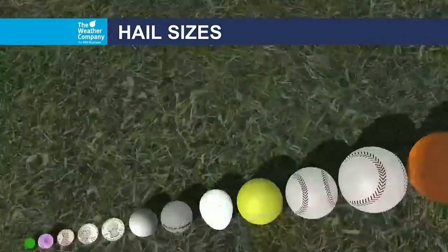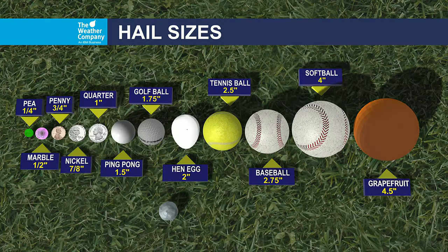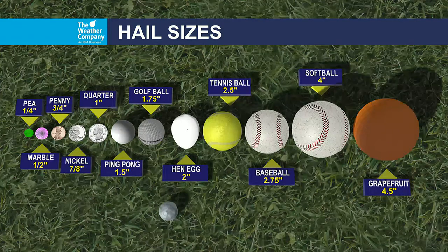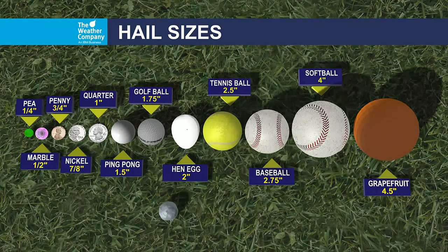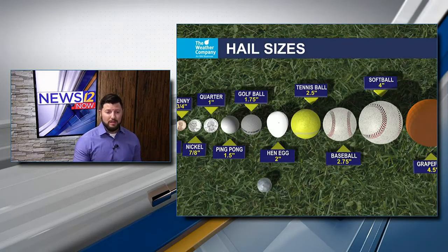As far as hail sizes, this is what we refer to. You hear us talking about quarter-size hail, golf-ball-size hail, baseball-size hail all the time on air. When we say inch-diameter hail, that's about the size of a quarter. When we say a storm is producing golf-ball-size hail, that's about an inch and three-quarters. By the time you get up to ping-pong or golf-ball size, that is typically when you start to see a lot of damage — damage to cars, to roofs, and things like that.